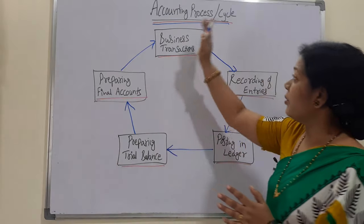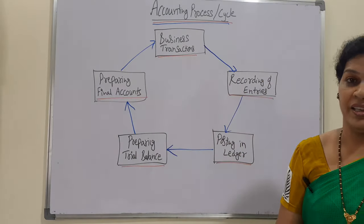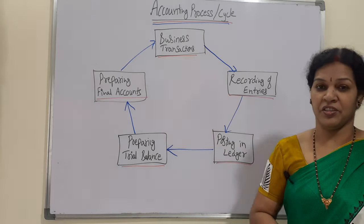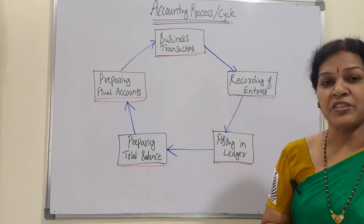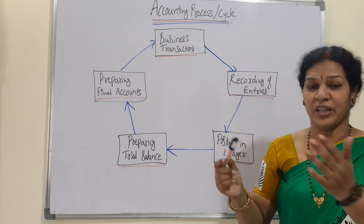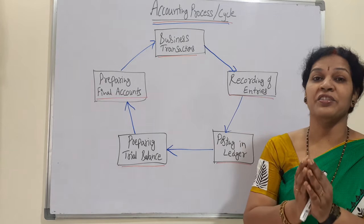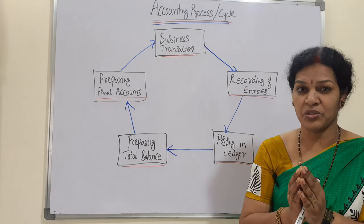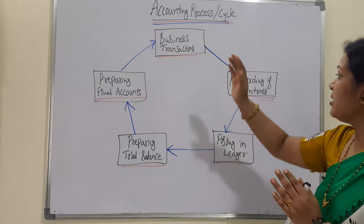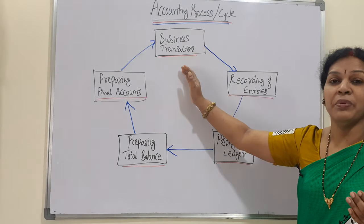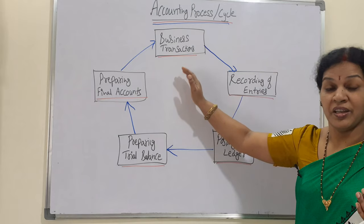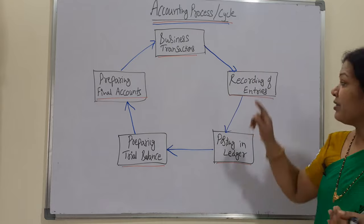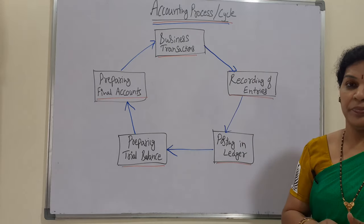In this accounting process or cycle, the first stage is business transactions. Business transactions means nothing but day-to-day transactions. We have to observe and consider those transactions. Once we know that transactions are taking place and there are many transactions, we take them to the next level.